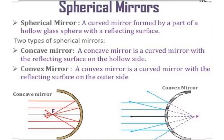Now we are going to study spherical mirrors in detail. A spherical mirror is a curved mirror formed by a part of a hollow glass sphere with a reflecting surface. These spherical mirrors are of two types: concave mirror and convex mirror. A concave mirror is a curved mirror whose inner surface is reflecting, or in other words, a curved mirror with the reflecting surface on the hollow side. A convex mirror is a mirror whose reflecting surface is outward, or a curved mirror with the reflecting surface on the outer side. From the diagrams, it is clearly visible that a concave mirror has the reflecting surface towards the inner side and a convex mirror has the reflecting surface on the outer side.